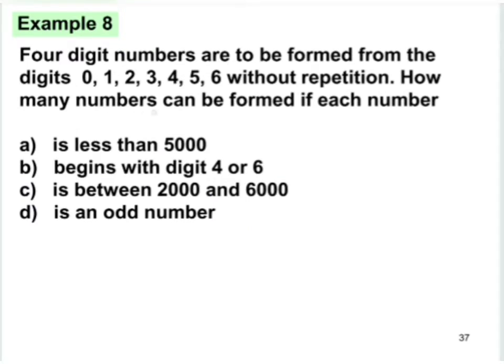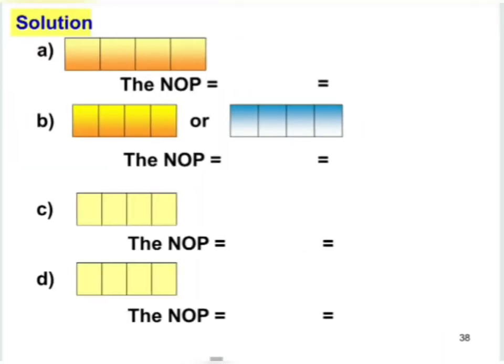Let's move on to example eight. Four-digit numbers are to be formed from the digits zero, one, two, three, four, five, and six without repetition. How many numbers can be formed if: (a) each number is less than five thousand, (b) begins with digit four or six, (c) is between two thousand and six thousand, or (d) is an odd number?